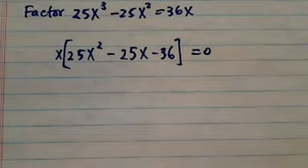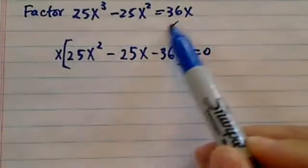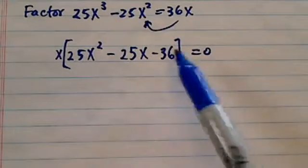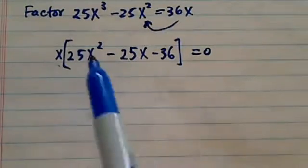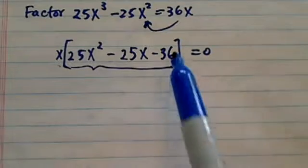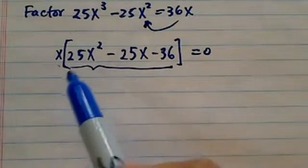To factor the top equation, what I did is I moved 36x over and pulled a common factor out. From here all I have to do is concentrate on how to factor this thing over there.